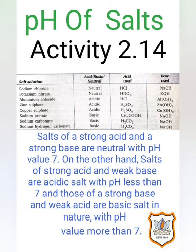pH values of salts — Activity 2.14: Collect salt samples including sodium chloride, potassium nitrate, aluminium chloride, zinc sulfate, copper sulfate, sodium acetate, sodium carbonate, and sodium hydrogen carbonate. Check their solubility in water using only distilled water. Then check the action of these solutions on litmus paper and find the pH using pH paper. Identify which of the salts are acidic, basic, or neutral, and identify the acid or base used to form each salt.